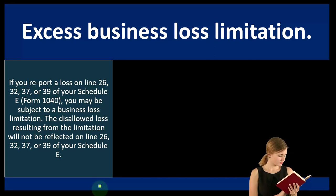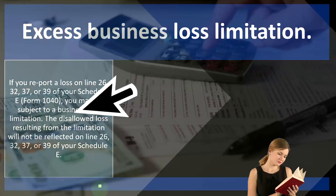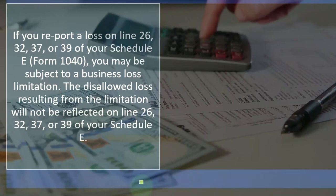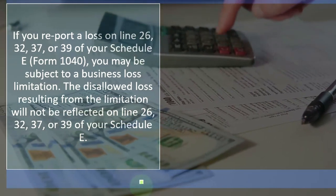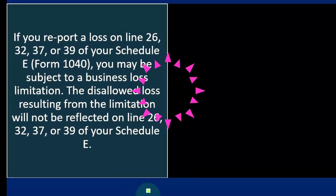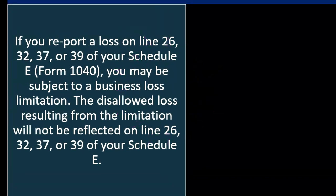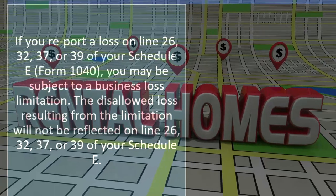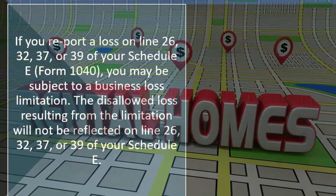Excess business loss limitation: if you report a loss on Line 26, 32, 37, or 39 of your Schedule E Form 1040, you may be subject to a business loss limitation. When you have rental income — or any kind of income — anytime you have a loss, the IRS is skeptical, because the IRS wants to take a piece of your income but not take on the risk of losses, since a loss might be taken against other income. So whenever we think about rental property, we're always thinking about what happens when there's a loss and whether there are limitations to that loss.